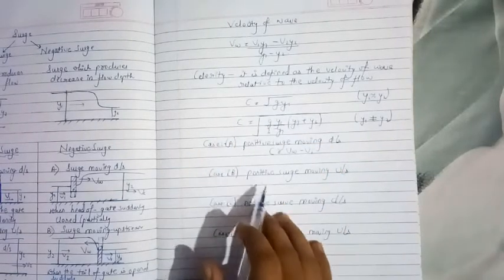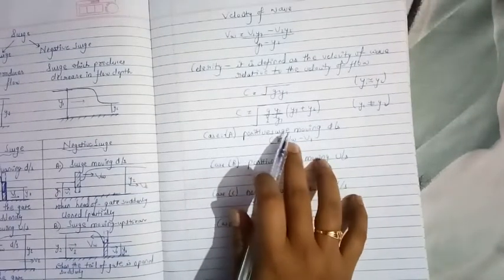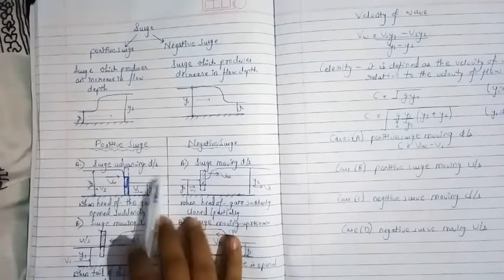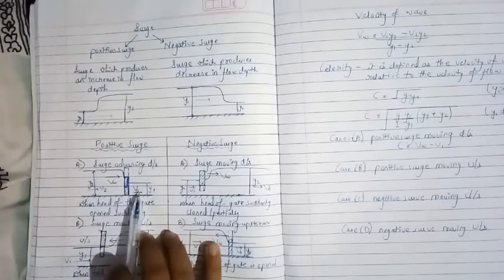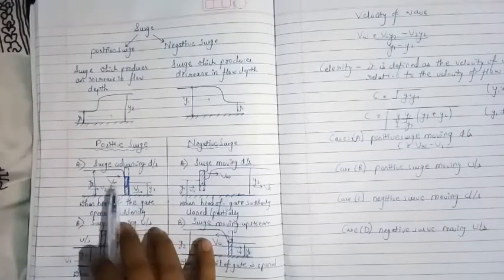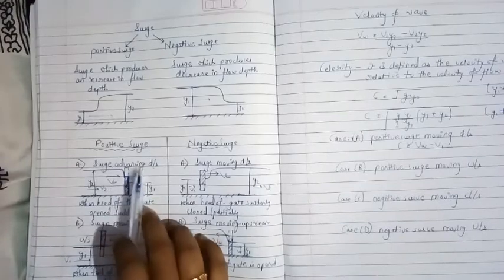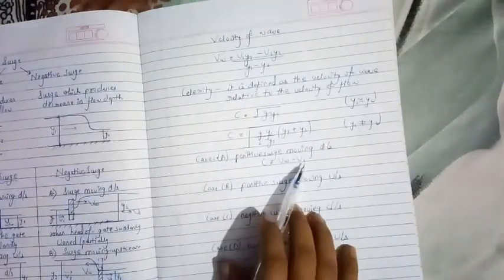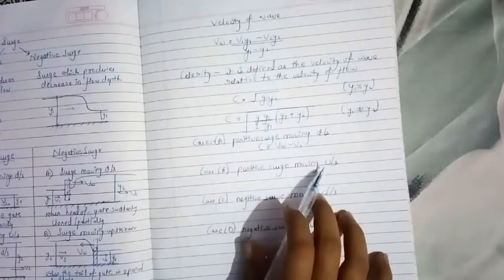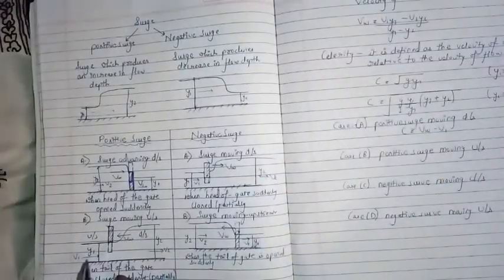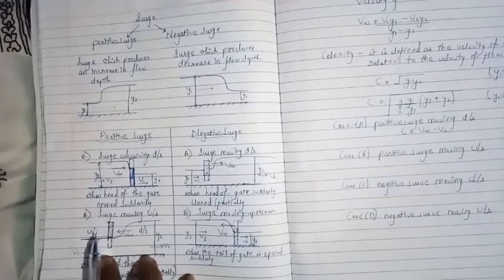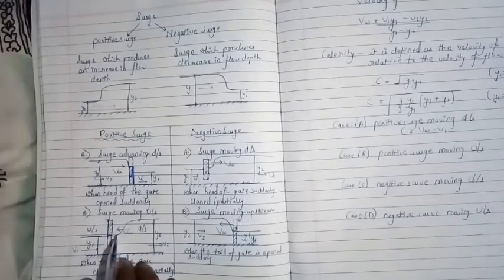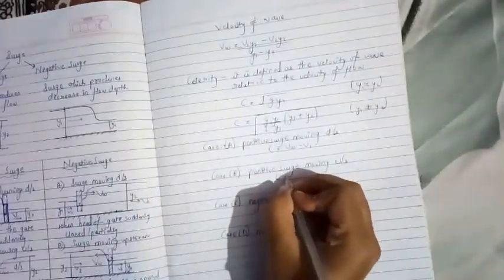Now we will see the different cases and the value of celerity in each case. For the first case — positive surge moving downstream — if v1 is the velocity of flow and vw is the velocity of the wave, taking the wave in the opposite direction of flow, the celerity is c = vw − v1. For the second case — positive surge moving upstream — where v1 is the flow velocity and vw is the wave velocity moving upstream, the celerity is c = v1 + vw.